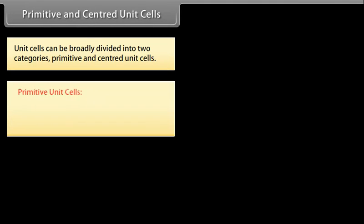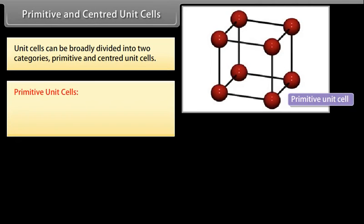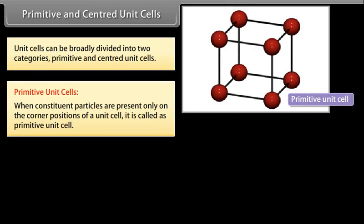Unit cells can be broadly divided into two categories: Primitive and Centered Unit Cells. Primitive Unit Cells: When constituent particles are present only on the corner positions of a unit cell, it is called as primitive unit cell.